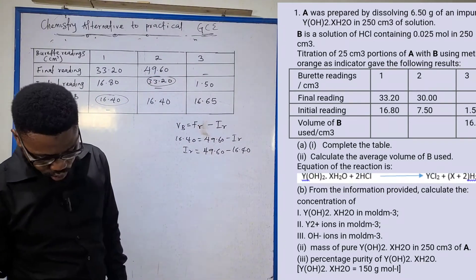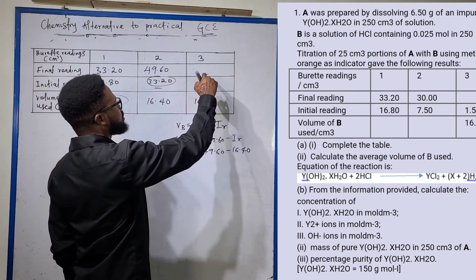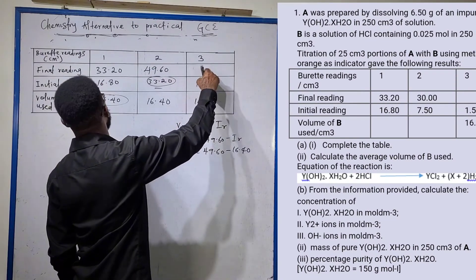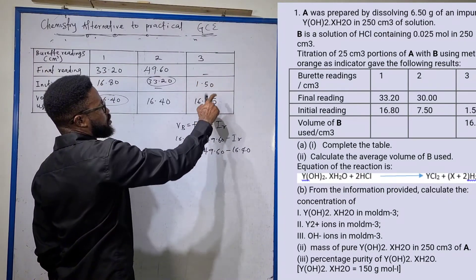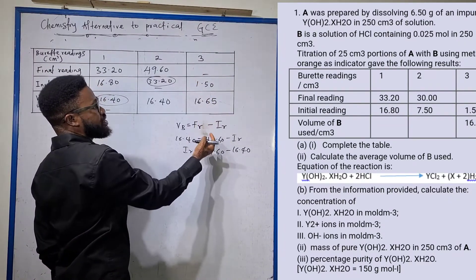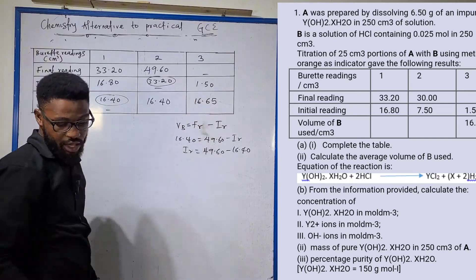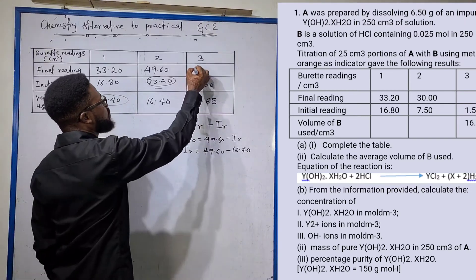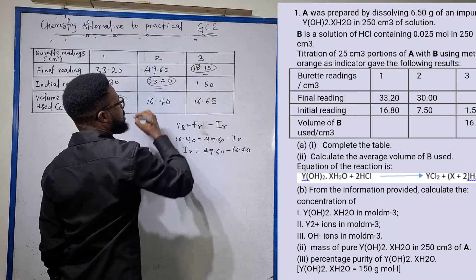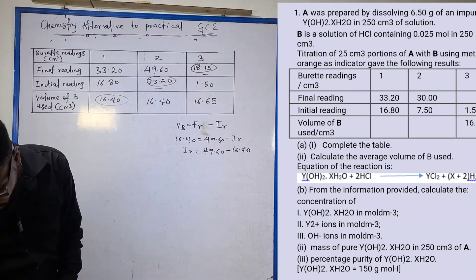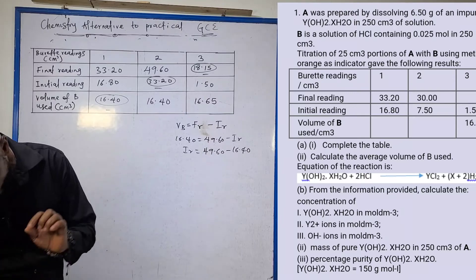For the last row, the final reading minus 1.50 gives this volume, so 16.65 plus 1.50 equals 18.15. With that we have been able to complete the table.